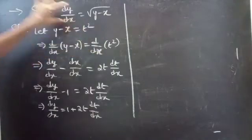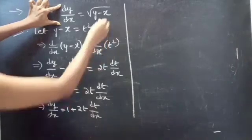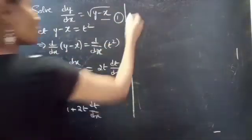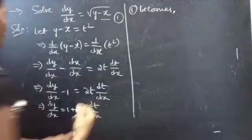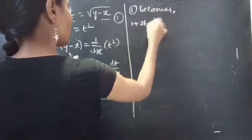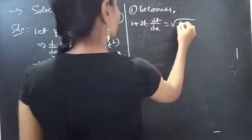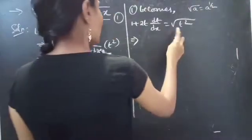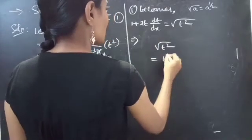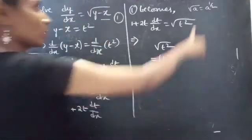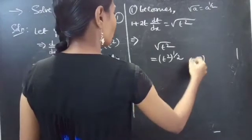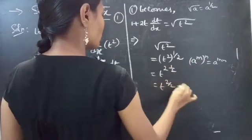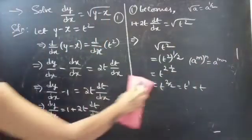Now replace y minus x by t squared and dy/dx by 1 plus 2t·dt/dx in the given differential equation. So it becomes 1 plus 2t·dt/dx equals square root of t squared. Since square root of t squared equals t squared to the power 1/2, which equals t to the power 2 times 1/2 equals t. So square root of t squared is t.